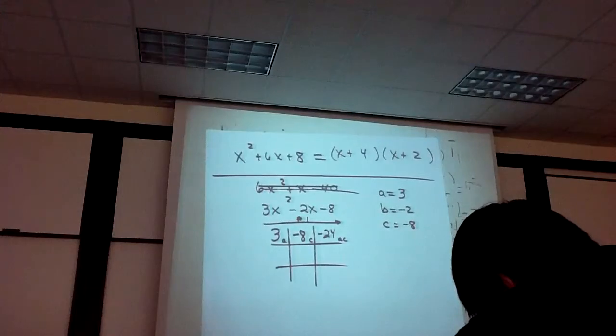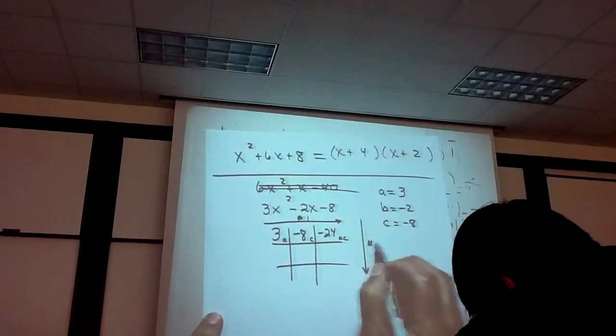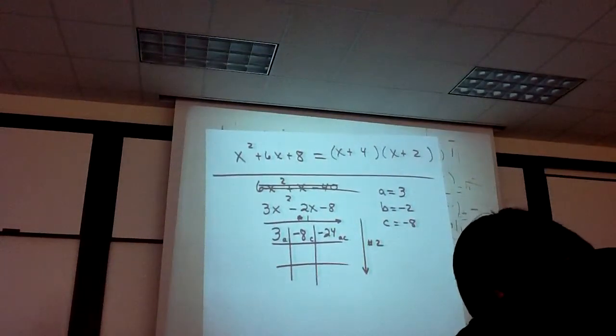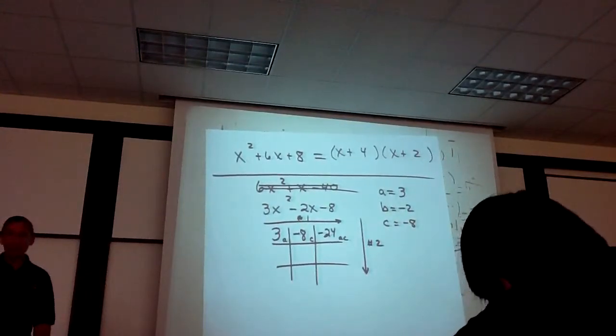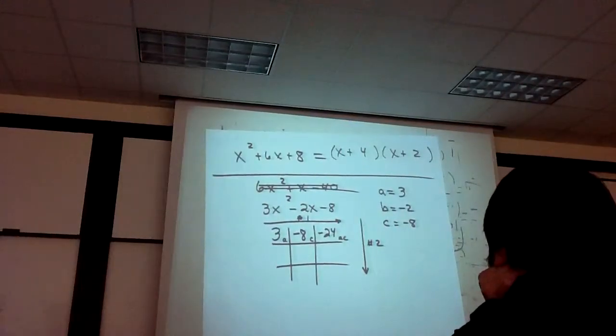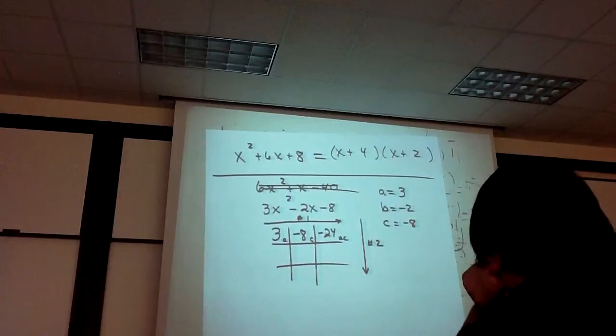Step number two goes down this row. And this is the only step that will actually require you to burn some mental calories. You're going to have to think for just a second on this step. Maybe not too long. This is one of the 'I'm looking for two numbers' steps.